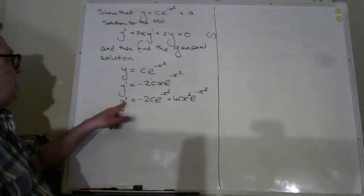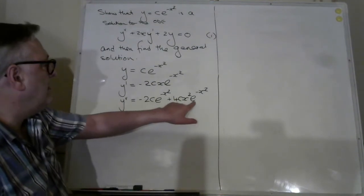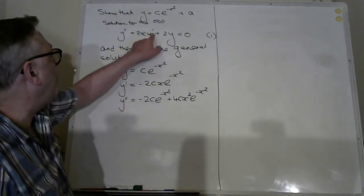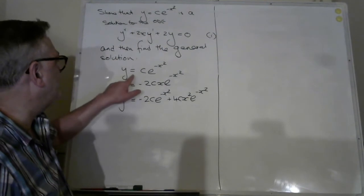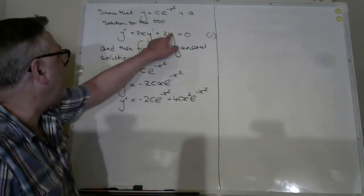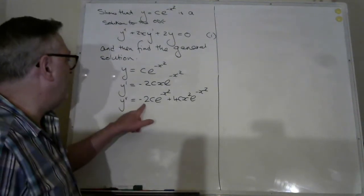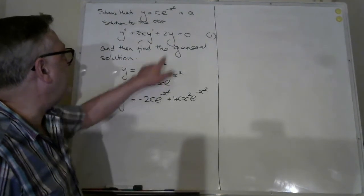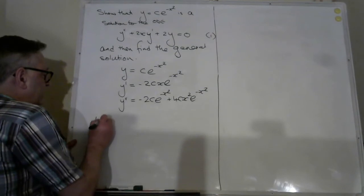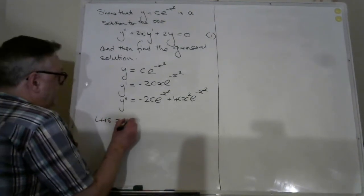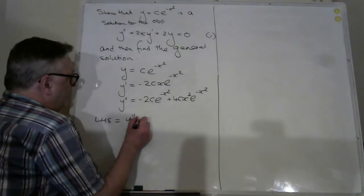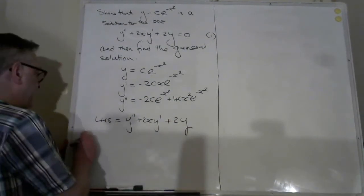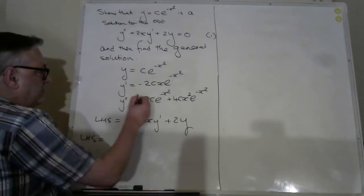What we now need to do is substitute this expression back in for y double prime, this expression back in for y prime, and y equals c e to the minus x squared back in for y. So the left-hand side — writing out the equation again — is y double prime plus 2x y prime plus 2y.